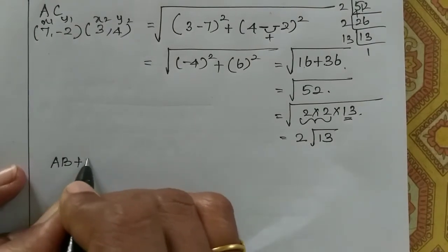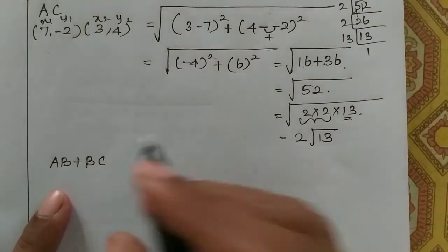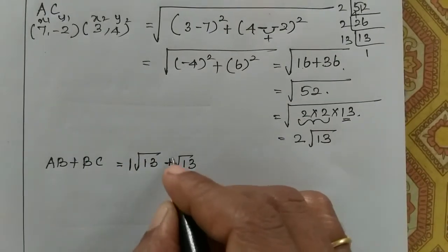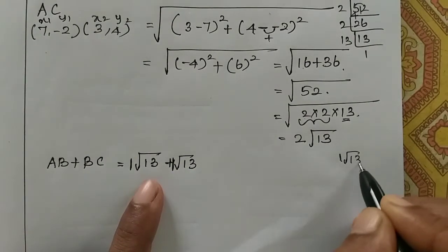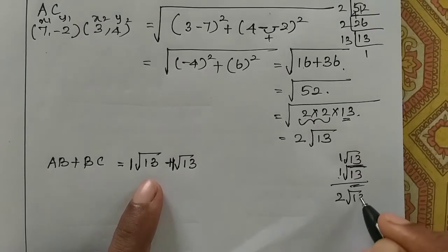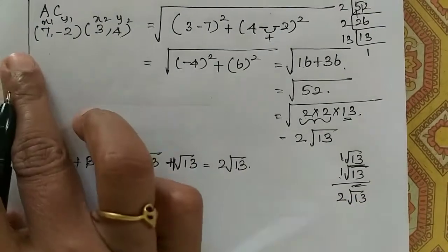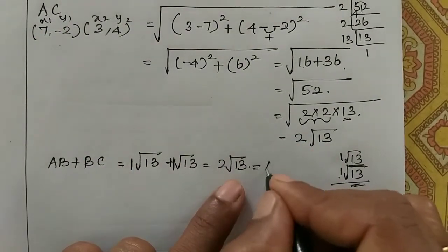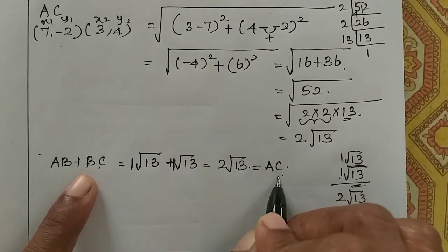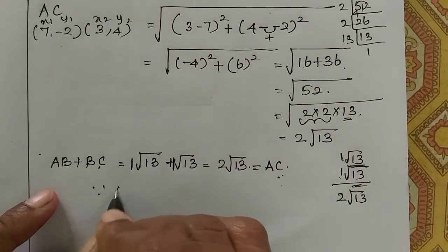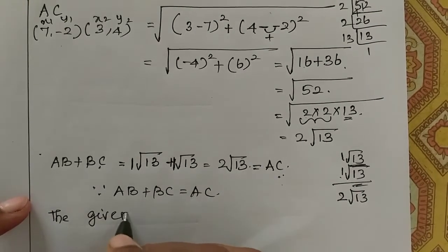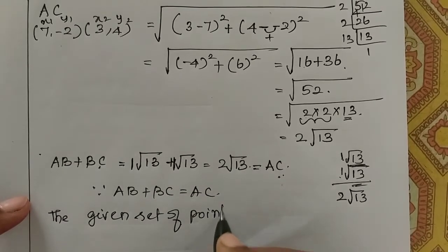Let's check: AB plus BC equals AC. AB is root 13, BC is root 13, so root 13 plus root 13 equals 2 root 13. And AC value: root 52 equals 2 root 13. So 2 root 13 equals AC. If we add AB plus BC, we get AC, which is 2 root 13. The three points are collinear. Since AB plus BC equals AC, the given set of points are collinear.